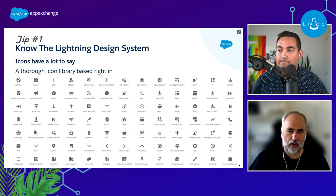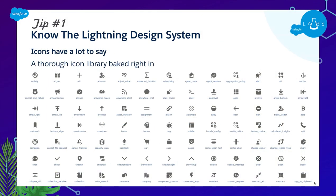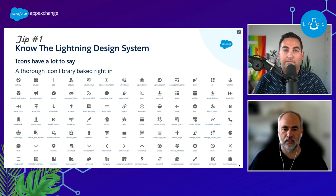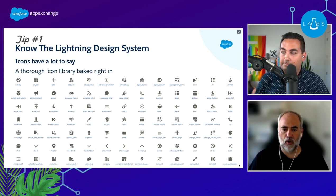Icons really have a lot to say. All standard icons in Salesforce — action icons and utility icons — are built into the Lightning Design System. You can use these icons to give visual clues to users about what a button does. For example, 'add' is an obvious one. Using those design system icons automatically means a consistent UI for users, guiding them in what they need to do and making it obvious what's going to happen.